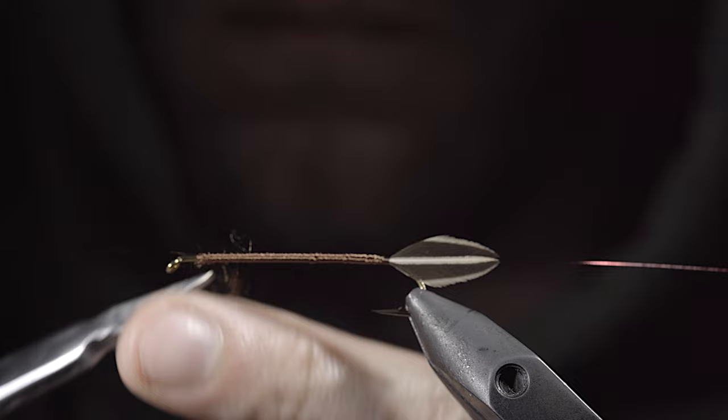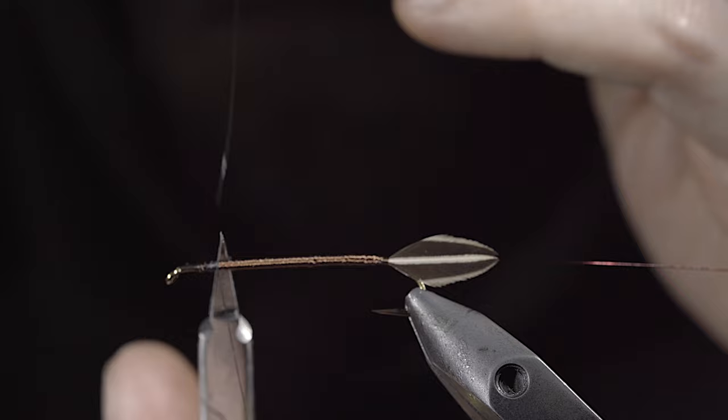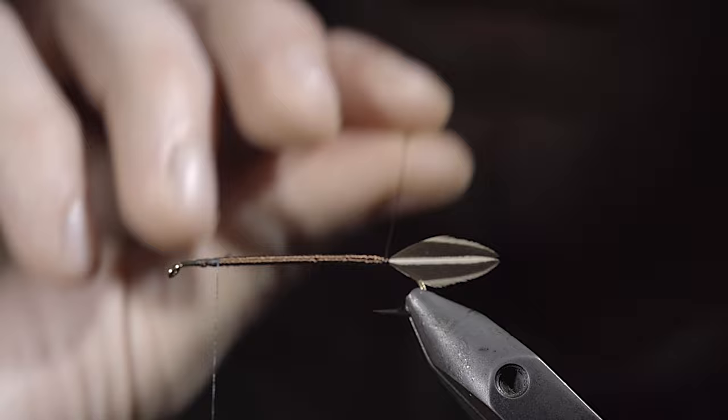Once complete, reattach your black thread, snipping the excess free. We'll then grab our wire and begin to wrap this forward, beginning in close touching spirals to create some durability as well as a hot spot at the back of our fly.